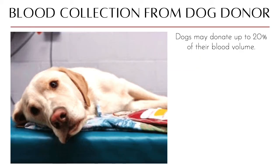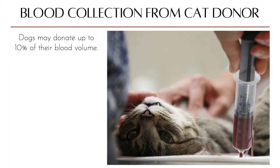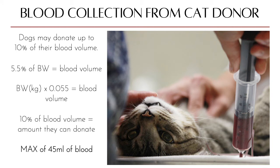Dogs may donate up to 20% of their blood volume; their blood volume is approximately 8.5% of body weight. The maximum donation for dogs is 450 ml, regardless of whether they exceed 30, 35, or 40 kg. Cats may donate up to 10% of their blood volume, with a maximum of 45 ml, even if their body weight exceeds the minimum criteria.